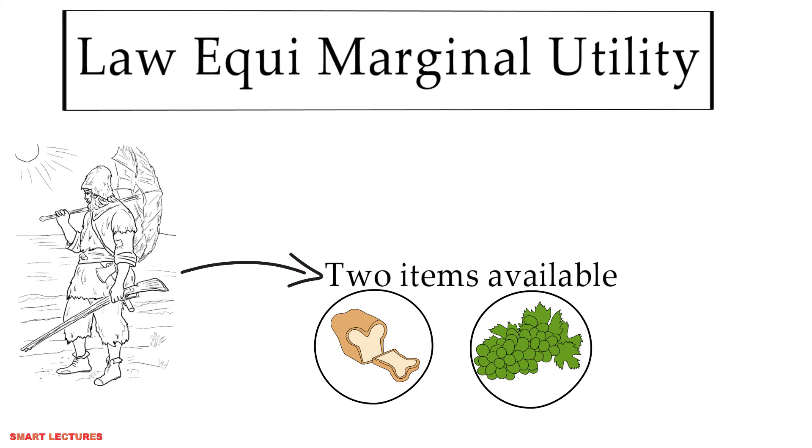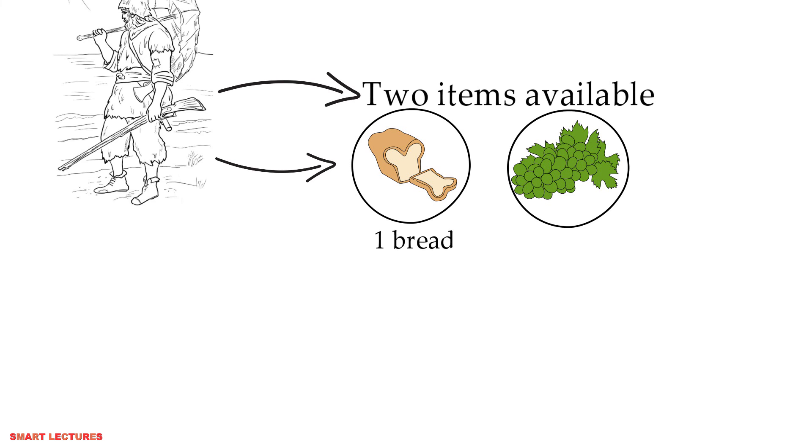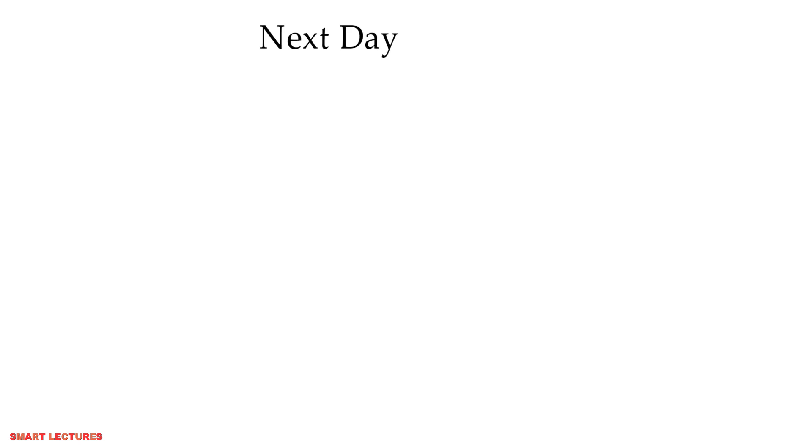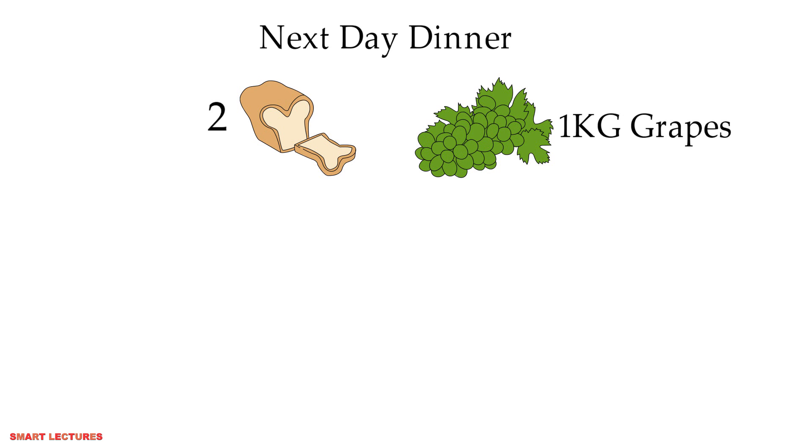To satisfy his hunger, he feels that tonight he would like to have one bread and two kilograms of grapes. So he has made the combination. In this way, he has made the combination of one bread and two kilograms of grapes because this is his preference today. Maybe the next day for dinner, he wants to have two breads and one kilogram of grapes.